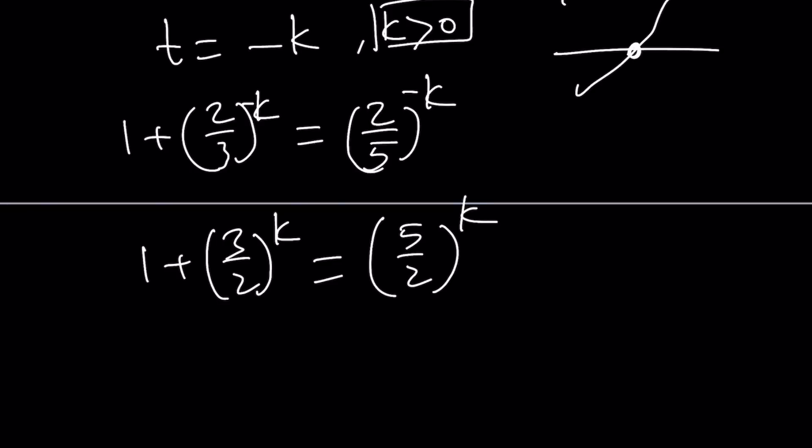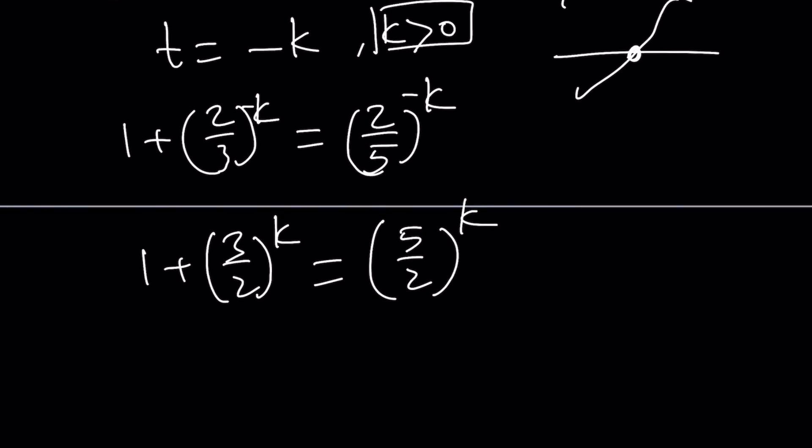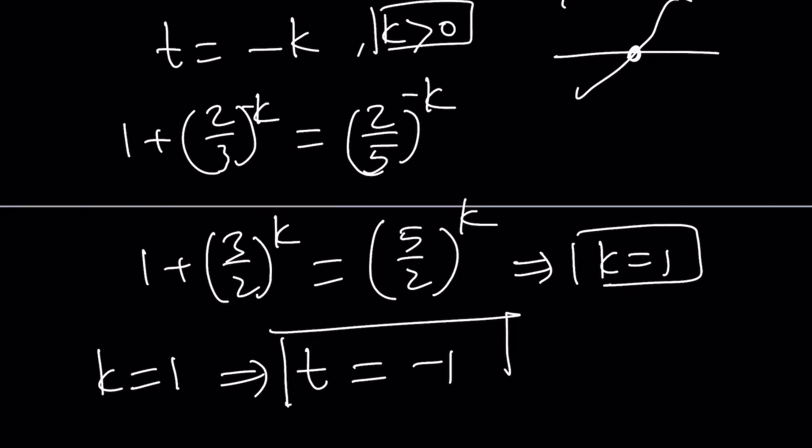Now we're good because if k is positive, then we're going to get numbers that are greater than 1. But take a look at this. What is 1 plus 3 halves? Isn't that 5 halves? Exactly. So for this very reason, k equals 1 works. But k equals 1 means t is equal to negative 1 because t is the opposite of k.